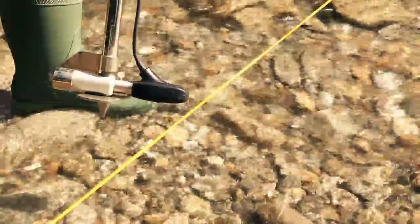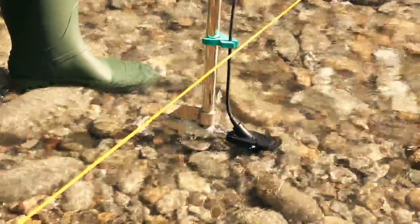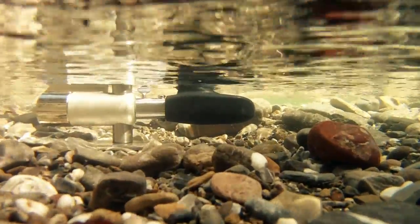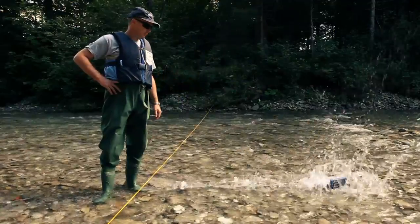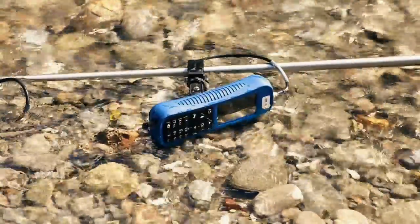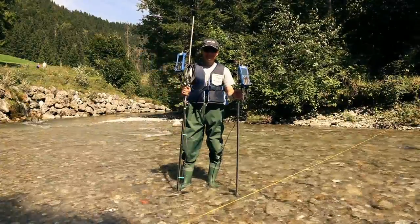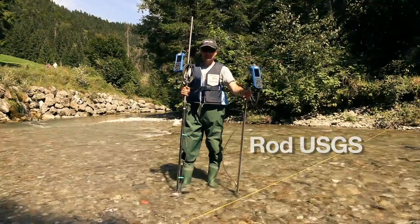Its sensor works on the magnetic inductive principle. It has no mechanically moving parts and therefore requires practically no maintenance. Together with its robust and waterproof handheld unit, the MF Pro was designed for use with conventional measuring rods using the classical verticals method.